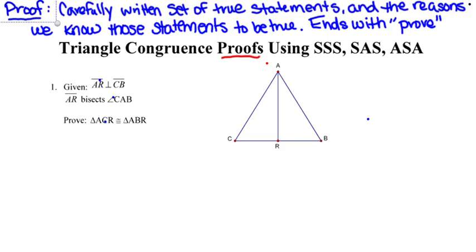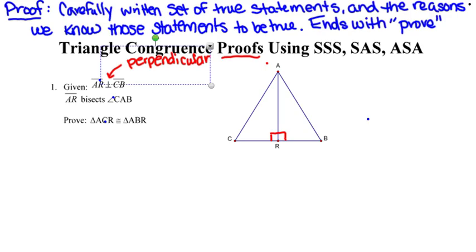Just like we've been doing in our other problems, we're going to always begin by marking the diagram. The first given tells us that segment AR is perpendicular to segment CB. Recall that perpendicular means forms right angles, so I'm going to find segments AR and CB in the picture and mark their point of intersection with our symbol for right angles. The second given is that segment AR bisects angle CAB, and an angle bisector creates two congruent angles — angles one and two — which I'll mark congruent as well.